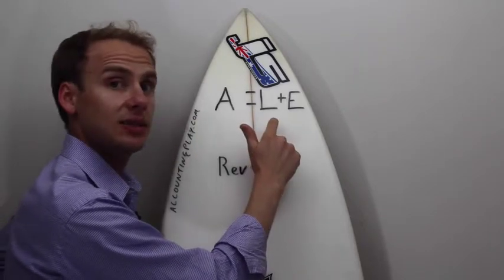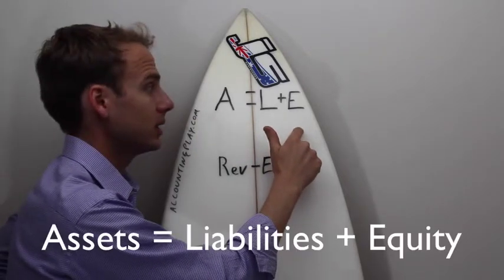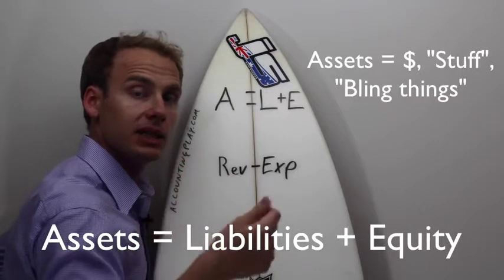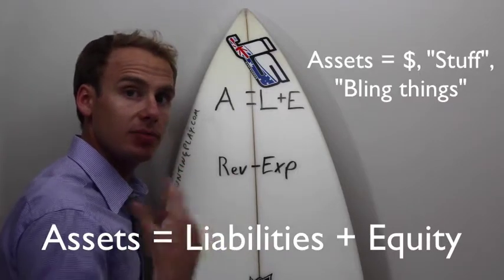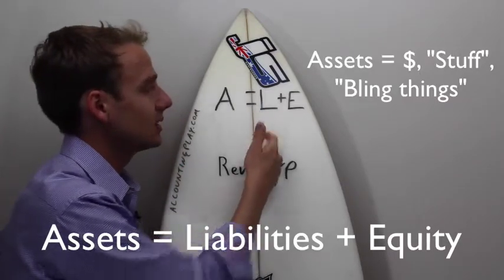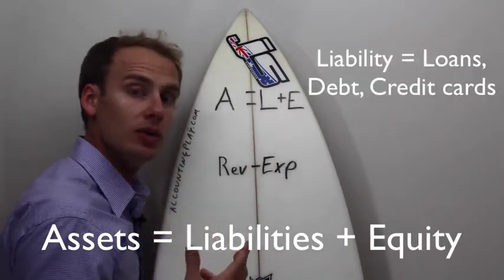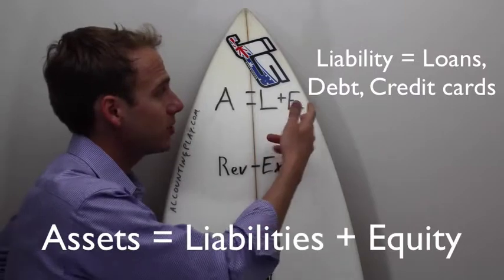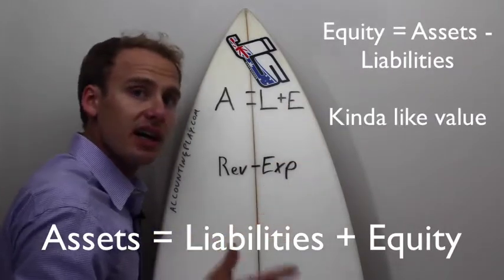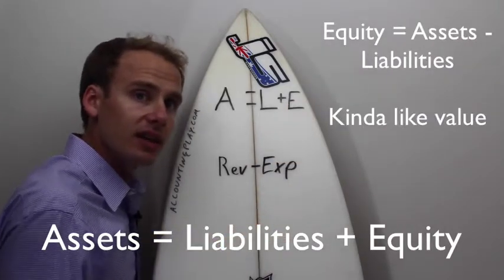Assets equals liabilities plus equity. What are assets? Money, stuff, things you own. What are liabilities? Money you owe. What's equity? It kind of represents the value of everything.